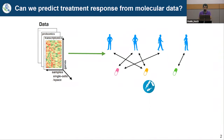Historically we could measure data in bulk — if I get a sample from a patient, say the lung or a tumor, I measure the average proteome or transcriptome. But now we can do this at the single-cell level: from that sample we can split up the cells and look at what's inside each individual cell. The numbers then explode and we need computational methods to make sense of this.